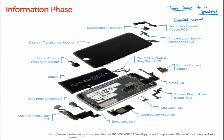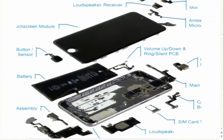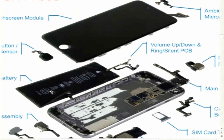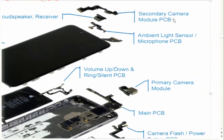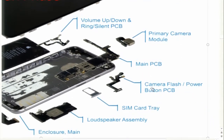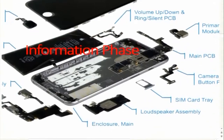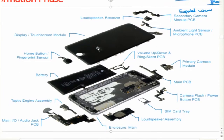We can see the different components of the Apple mobile here — loudspeaker and receiver, the top, the main body, the outer cover, the battery, volume ring up and down, secondary camera module, PCB, ambient light sensor, microphone, primary camera module, main PCB or main circuit board that has all the processor components, camera and flash, SIM card tray, and loudspeaker assembly.